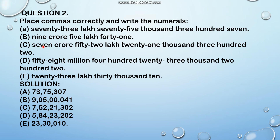Next: 7 crore 52,21,302. Write 7, then 52 for the lakhs period, comma, then 21 for the thousands period, comma, then 302. So the number is 7,52,21,302.